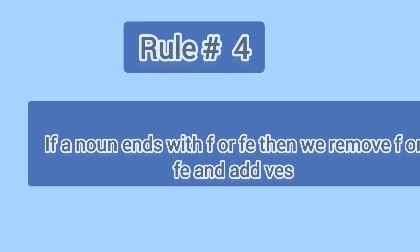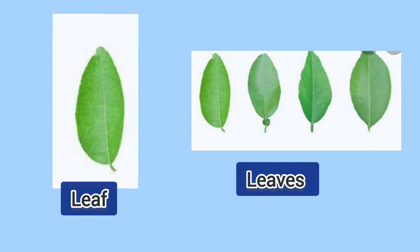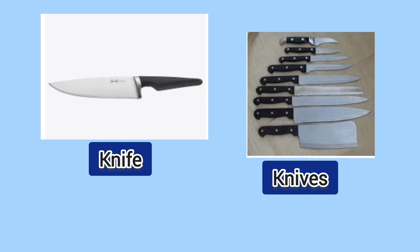Rule number four. If a noun ends with f or fe, then we remove f or fe and add ves. Like leaf, leaves; knife, knives.